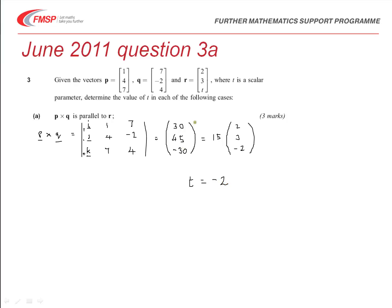Our marks in this particular case: we're attempting this vector product as a method mark. For obtaining the correct answer to P cross Q, you'll get an accuracy mark. For then expressing this as a multiple of R, and realizing that T has to be negative 2, you'll then get a mark as well.